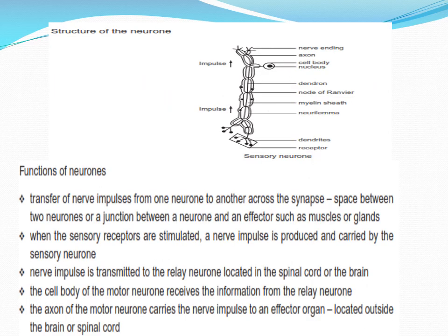The structure of neurons: impulses travel in sensory neurons from receptors — dendrites receive the stimuli, passing them along the axon to the cell body, then to the nerve ending and into the central nervous system. The function of a neuron is to transfer nerve impulses from one neuron to another across the synapse. The synapse is the space or junction between two neurons, or between a neuron and an effector such as a muscle or gland.